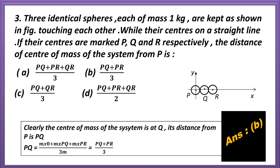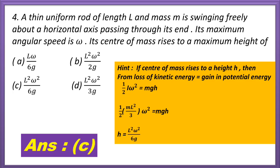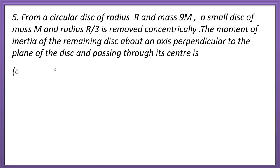Question 4. A thin uniform rod of length L and mass M is swinging freely about a horizontal axis passing through its end; its maximum angular speed is ω. Its center of mass rises to a maximum height of: Lω/6g, L²ω²/2g, L²ω²/6g, or L²ω²/3g? Using loss of kinetic energy equal to gain in potential energy: ½Iω² = Mgh. On solving, h = L²ω²/6g. So the correct answer is option C.